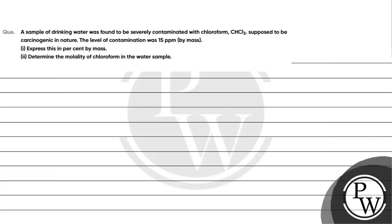Hello, let's read this question. A sample of drinking water was found to be severely contaminated with chloroform (CHCl3), supposed to be carcinogenic in nature. The level of contamination was 15 ppm by mass. Express this in percent by mass and determine the molality of chloroform in the water sample. The key concept for this question is ppm.